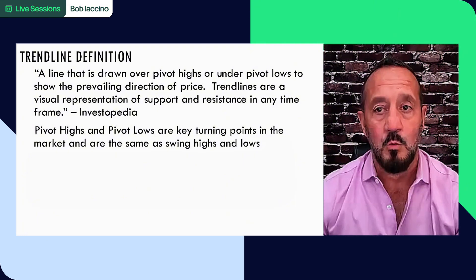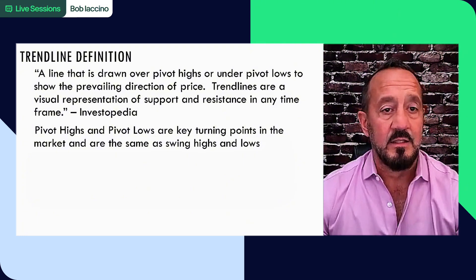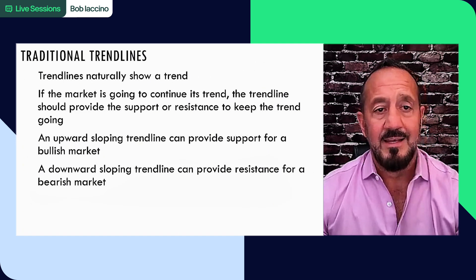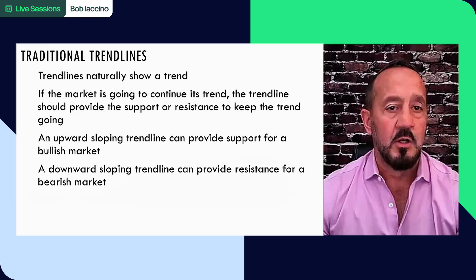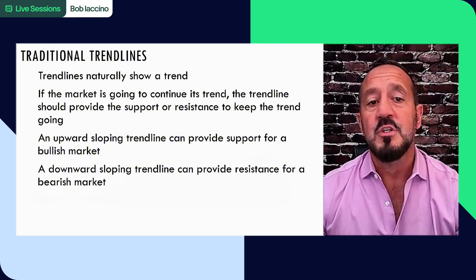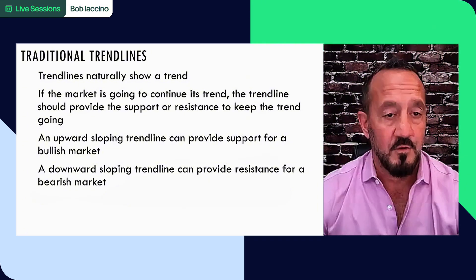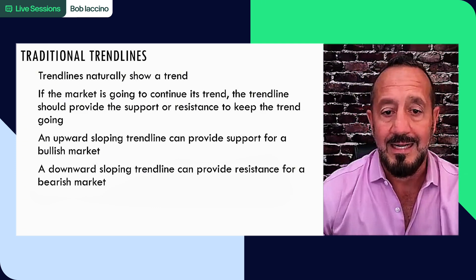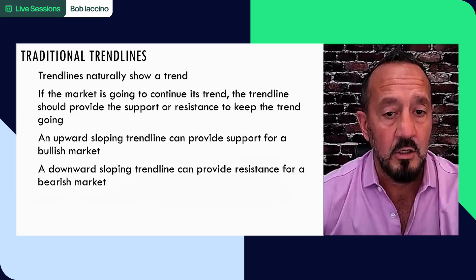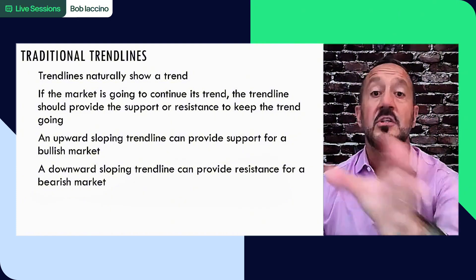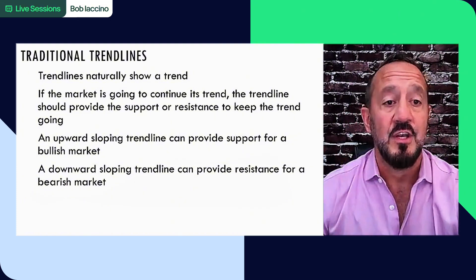You can call them pivots, whatever you want. This is basically the definition of a trend line and the structure that supports it. Trend lines naturally show a trend. If the market is going to continue its trend, the trend line should provide support or resistance to keep that trend going. An upward sloping trend line can provide support for a bullish market. A downward sloping trend line can provide resistance for a bearish market. I know this is fairly rudimentary and review for most of you, but I have to establish this structure to go into the next session next week.